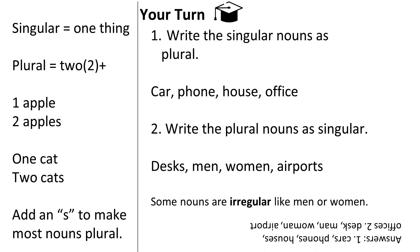Another important part of English is knowing when something is singular or plural. Singular means one thing. Plural means two or more things — like one apple, two apples, one cat, two cats. Notice that we add an 's,' and sometimes we add an 'es,' to make most nouns plural. There are some other irregular nouns that change their form, like 'child' becomes 'children.' The more you read, the more you'll be able to recognize irregular nouns and their singular and plural forms.